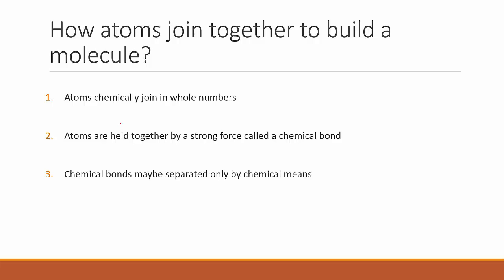How exactly do atoms join together to build a molecule? First, atoms chemically join in whole numbers — either one, two, or three atoms. There is no half or quarter of an atom. Second, atoms are held together by a strong force called a chemical bond. So there is a chemical bond formed between two atoms which holds them together.